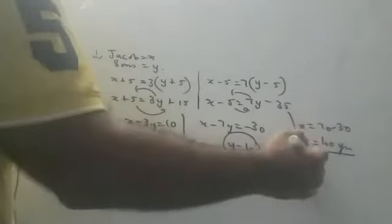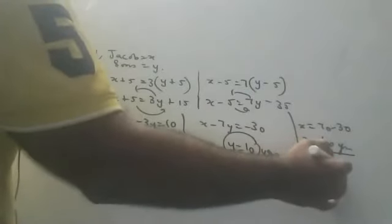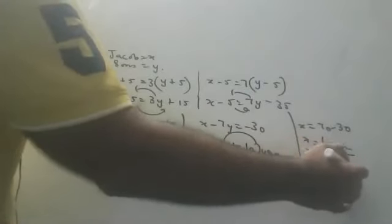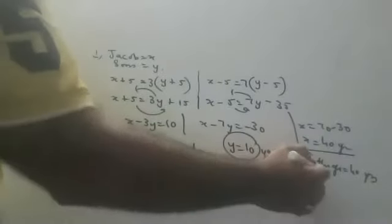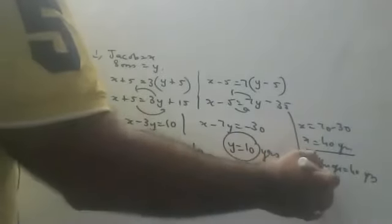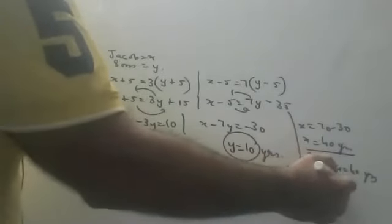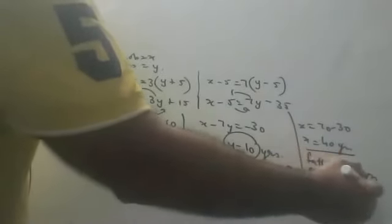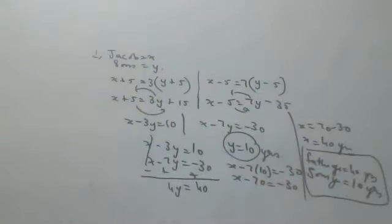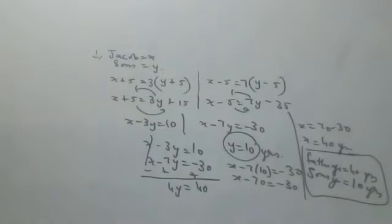So father's age is 40 years and son's age is 10 years. You should write the answer statement clearly. If you don't write years, marks cut. You must write 'father's age is 40 years' and 'son's age is 10 years' — always write the units.